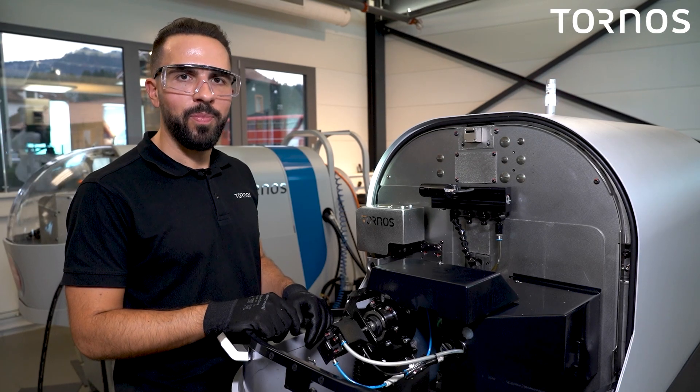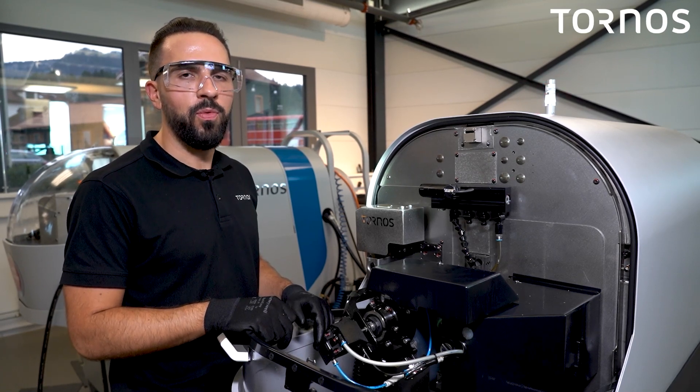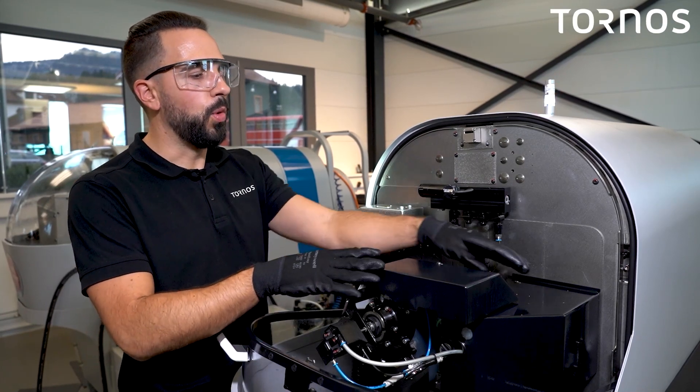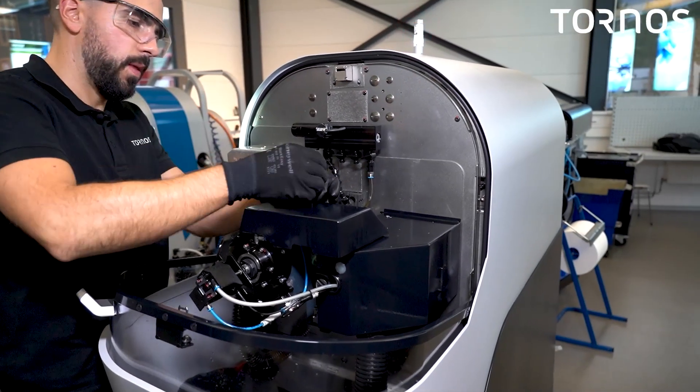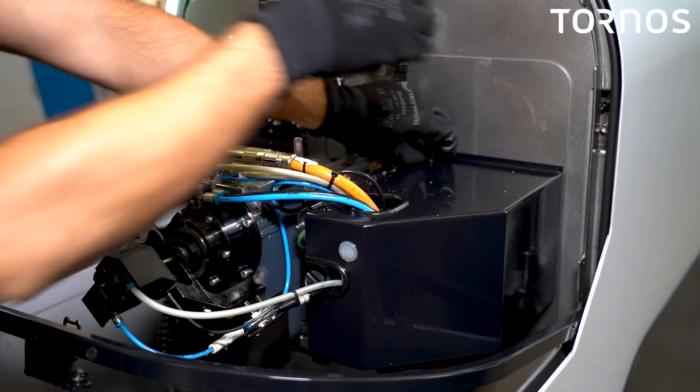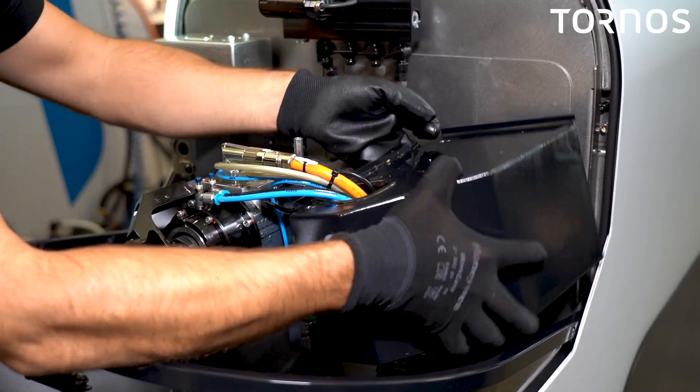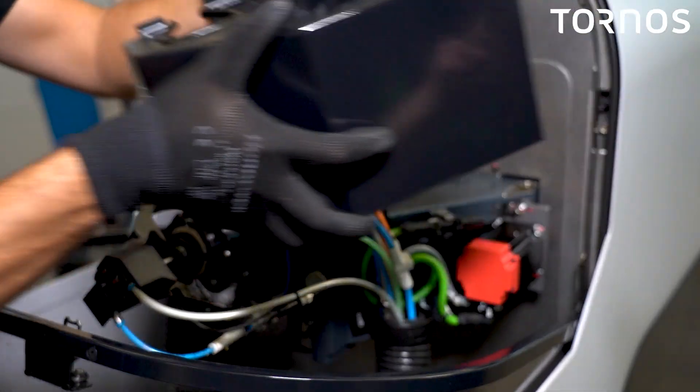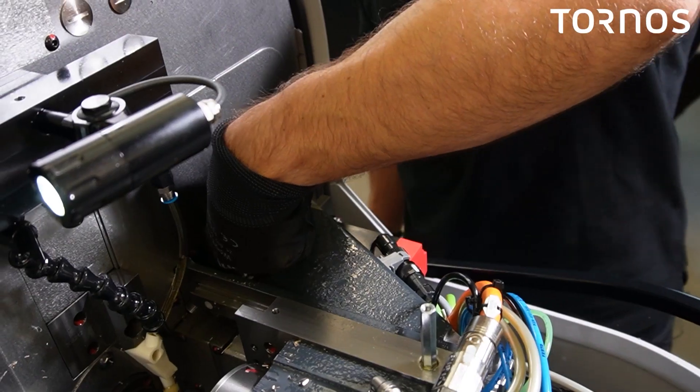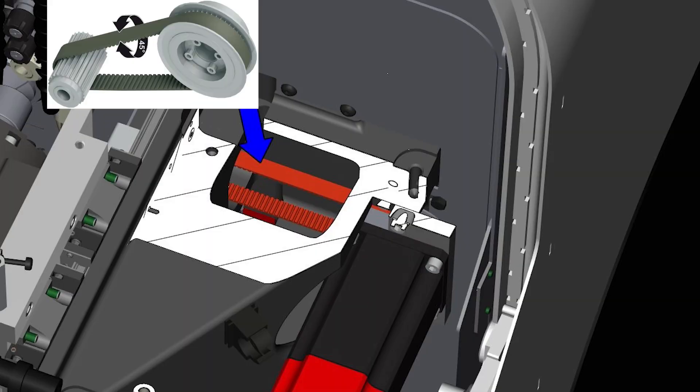Another step of the maintenance on the Swiss Nano 4 is to check the Z4 belt tension. For that, you have to remove both covers. Insert your finger in the hole located on the top of the forecasting. You should feel the Z4 belt under it. Check the tension, 45 degrees maximum.